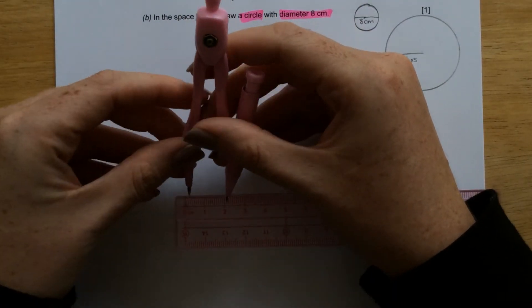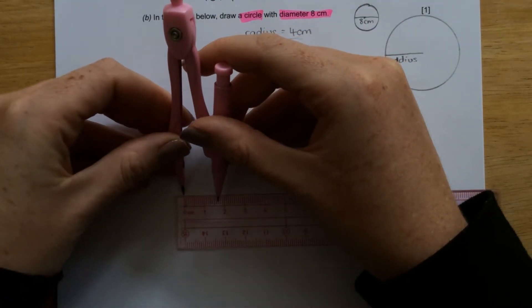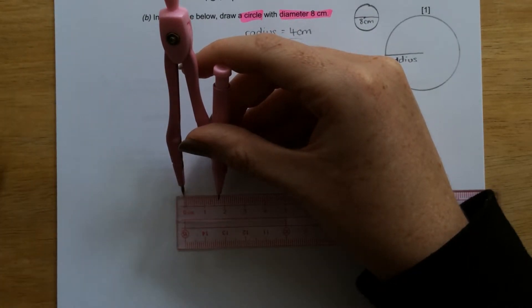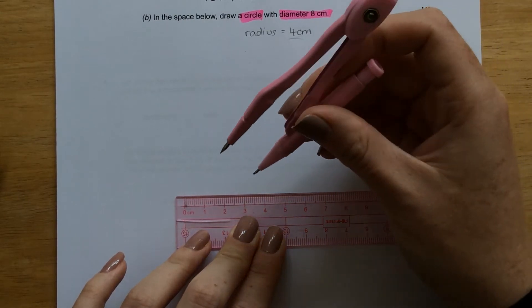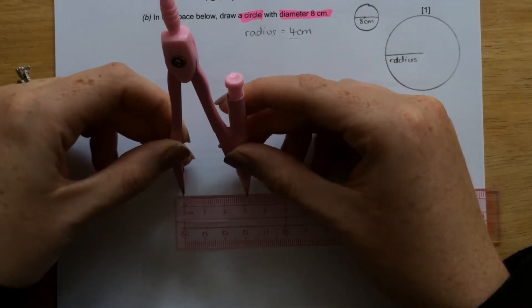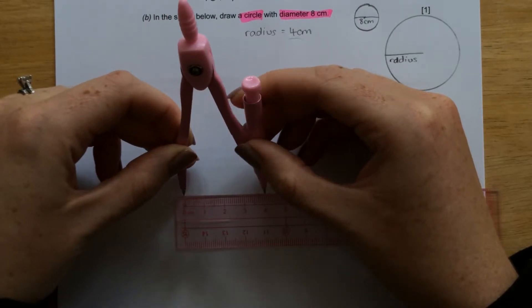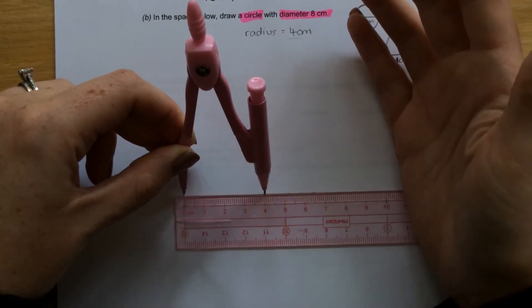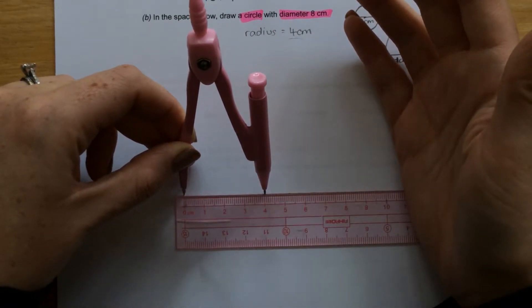So if I put the point on zero, that's here. The point on zero, and exactly the pencil at 4.